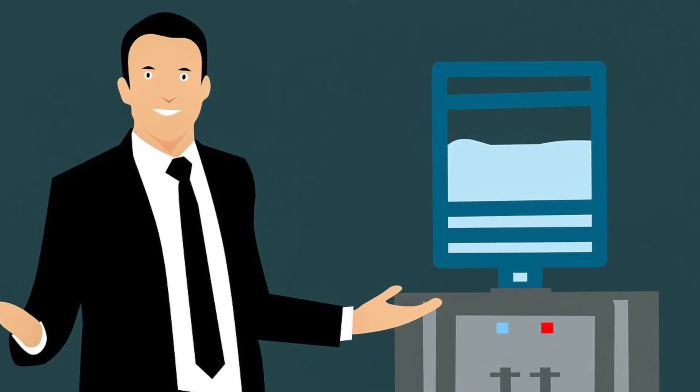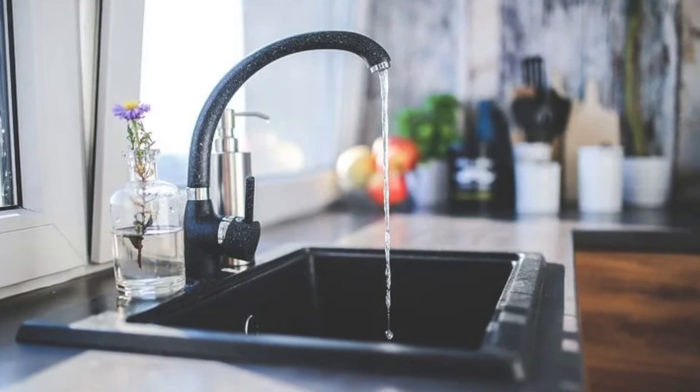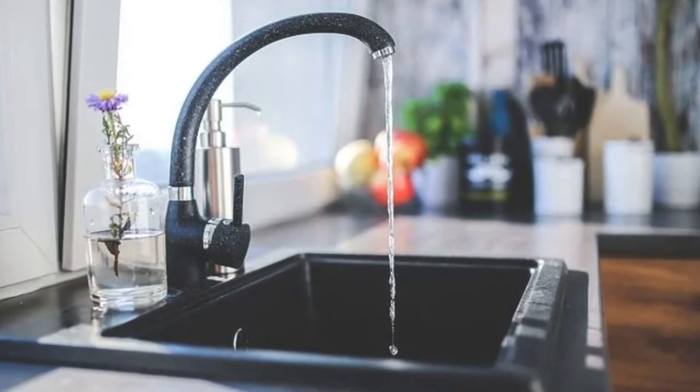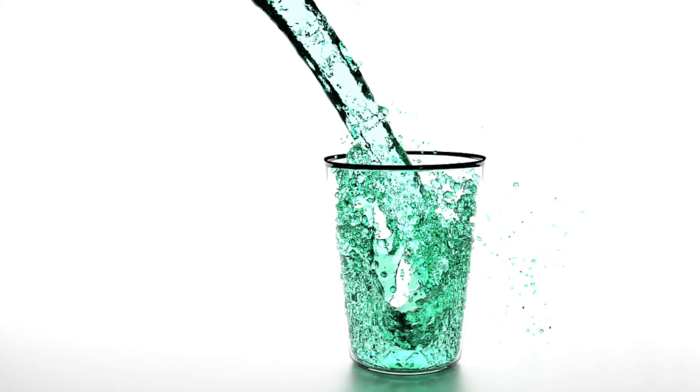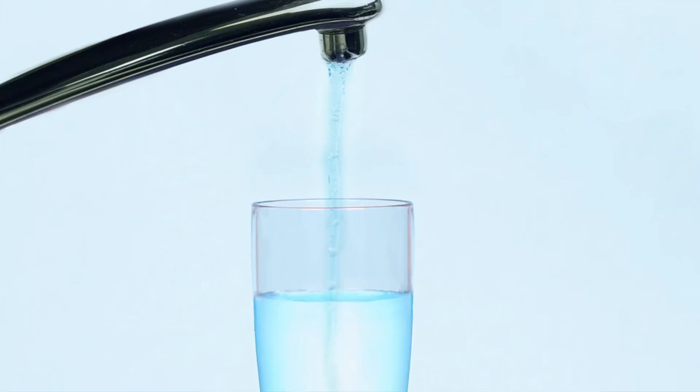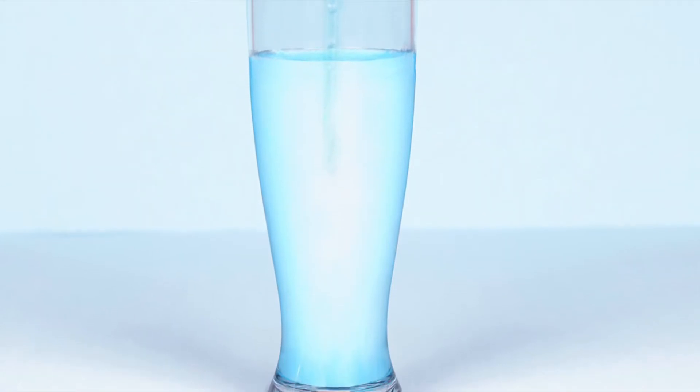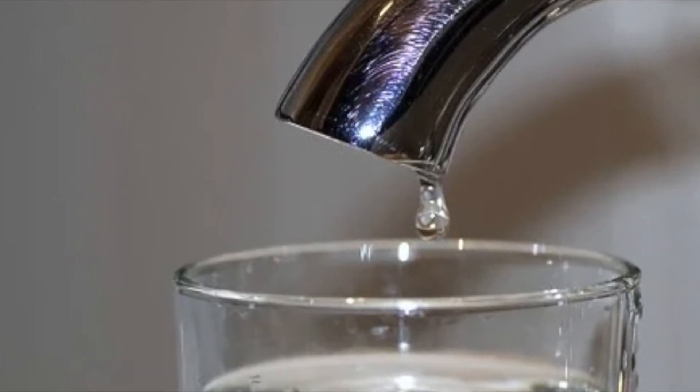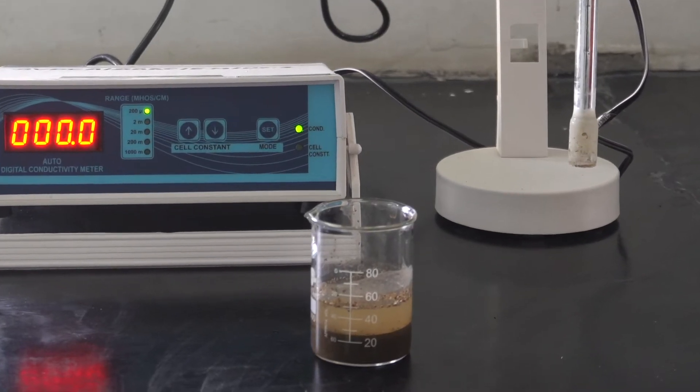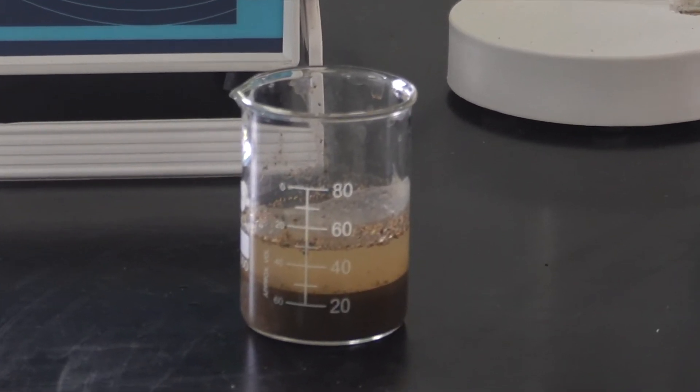Pure water does not conduct electricity, but most water, even tap water has enough dissolved salts to be conductive. Because the concentration of salts in water directly affects its conductivity, the measurement of electrical conductivity is a very effective way of measuring salt concentrations in soil water.